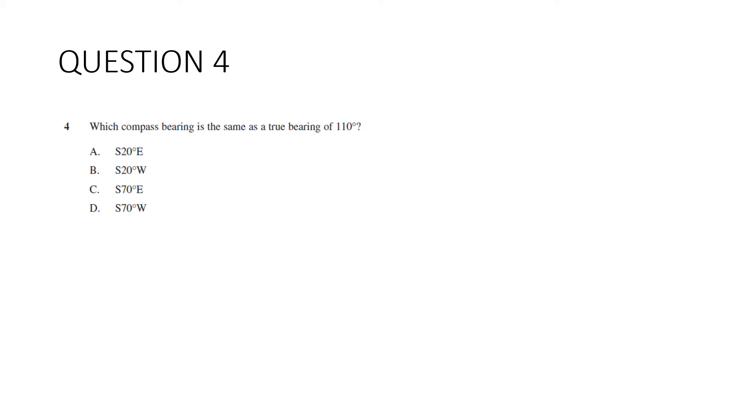Question 4. Which compass bearing is the same as a true bearing of 110 degrees? So the best idea with this question is to draw a quick sketch. So there's 110 degrees there. Remember with compass bearings, we're going to either go from north or south first, then towards east or west. So this line here is closest to south, so we're going to go from south, a certain angle, and then east. So all we've got to do really is figure out what this angle is. That's 180. Take off 110 makes this one 70. So it's going to be south 70 degrees east, which is C.